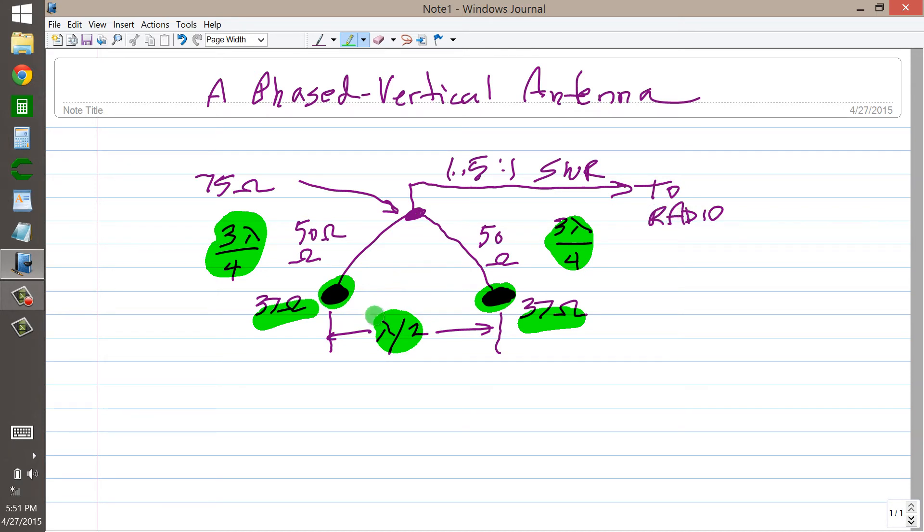The important thing is to space these things a free space half wavelength apart. These are equally long, these feed lines here, so these are going to be in phase with each other. As a result of that, you're going to get maxima in your radiation pattern going that way and that way, perpendicular to the line connecting the antennas. So if these antennas are oriented east-west, your gain will occur in a north and a south direction.